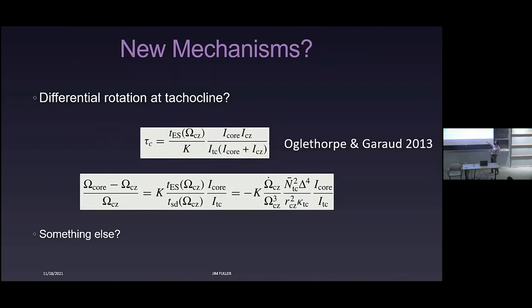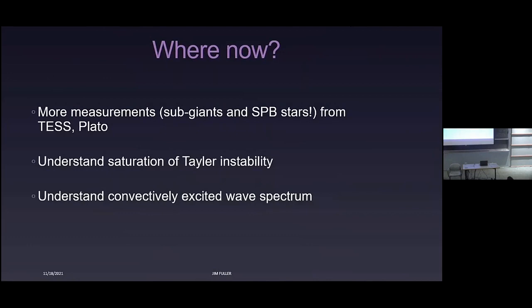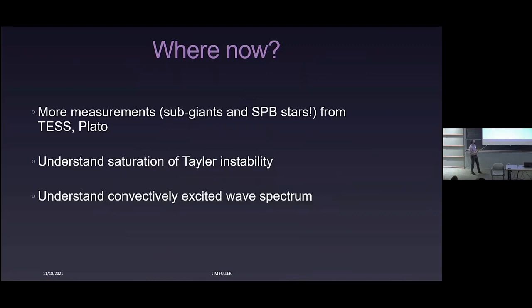Pascal has an interesting mechanism that depends on angular momentum transport across a thin tachocline, where the width of that tachocline is a parameter of the model, which is hard to predict. To conclude: we have beautiful data that we can compare models to, but so far we haven't been able to fully understand what we're seeing. We need more work to understand magnetic instabilities like the Tayler instability and magnetic torques, and the spectrum of waves and their angular momentum transport inside stars. More data from subgiants and SPB stars will help pin down the mechanisms that work.